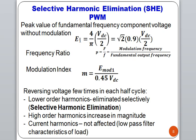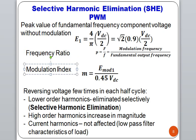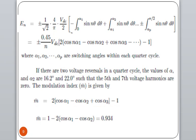If we talk about peak value, the fundamental frequency voltage is E1, which will be (4/5) × (VDC/2). If we talk about the frequency ratio as well as the modulation index, the frequency ratio is F/f — that is, the modulation frequency divided by the fundamental output frequency. The modulation index M will be E1, the RMS voltage of the fundamental value of the output modulated voltage, divided by 0.45 × VDC. With P switchings, switching angles are alpha1, alpha2, ... alphaP.